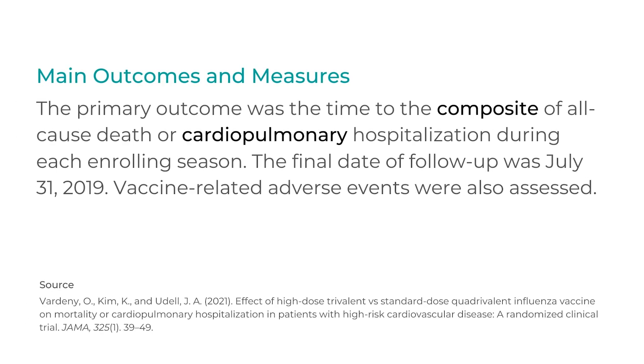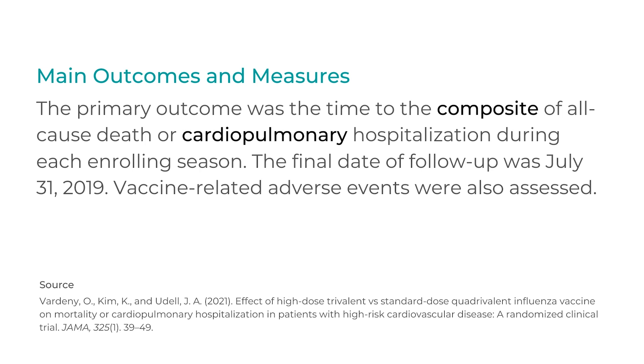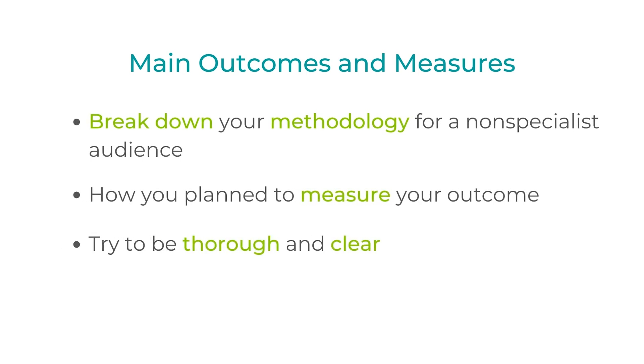The next section is Main Outcomes and Measures. Notice how the language is fairly straightforward — terms like 'composite' and 'cardiopulmonary' show that this is meant to be understood by a fairly educated audience, but these aren't highly specialized terms. This may be because the AMA guide specifically states that this section is a place to further break down your methodology for a non-specialist audience. Here, you'll state how you plan to measure the outcome of the study — your methodology. Try to be thorough and clear.